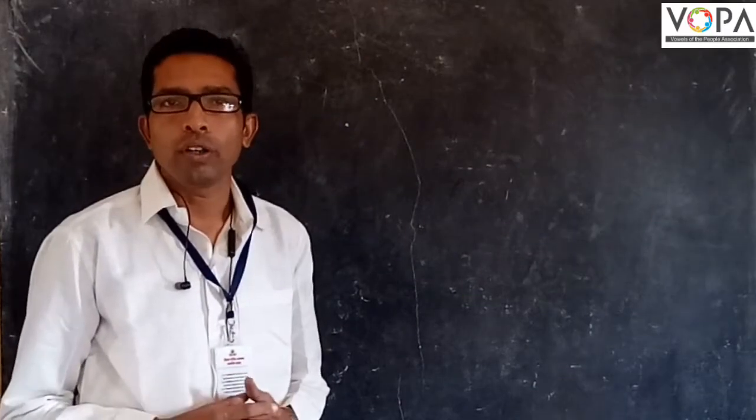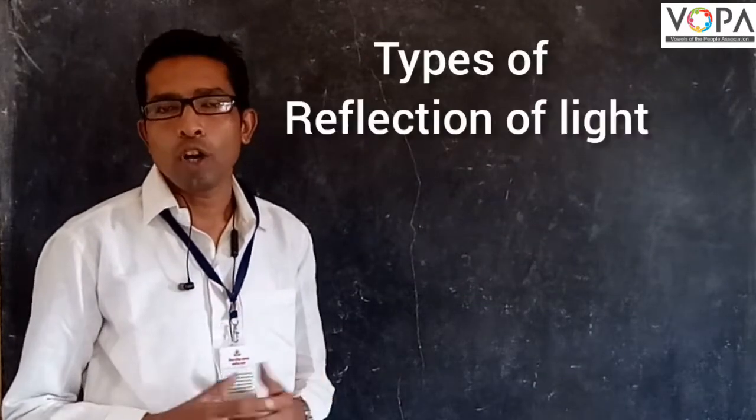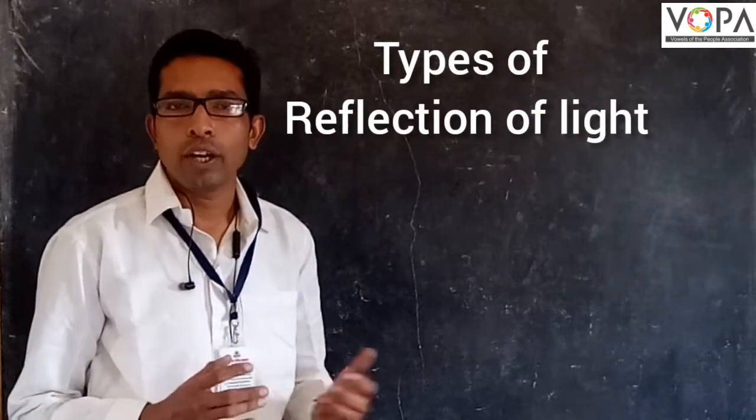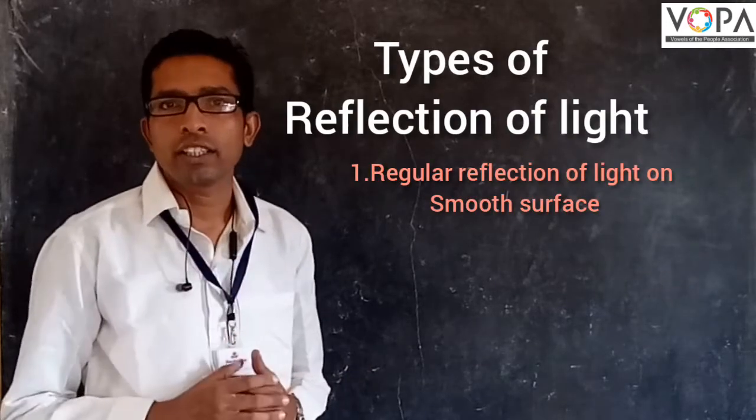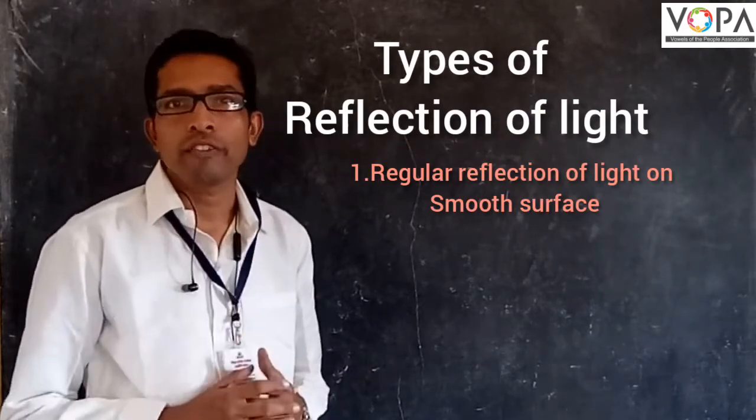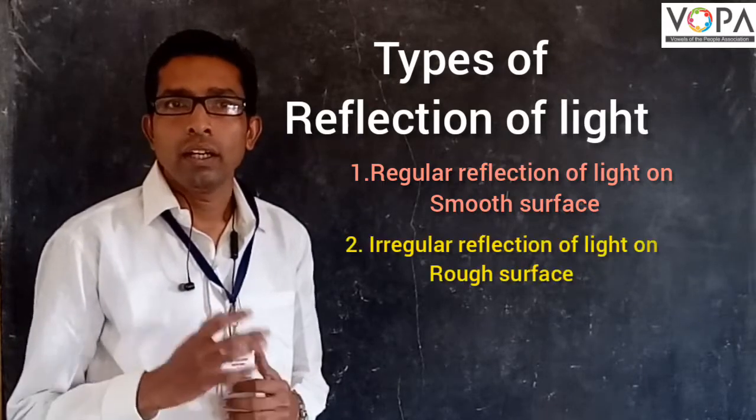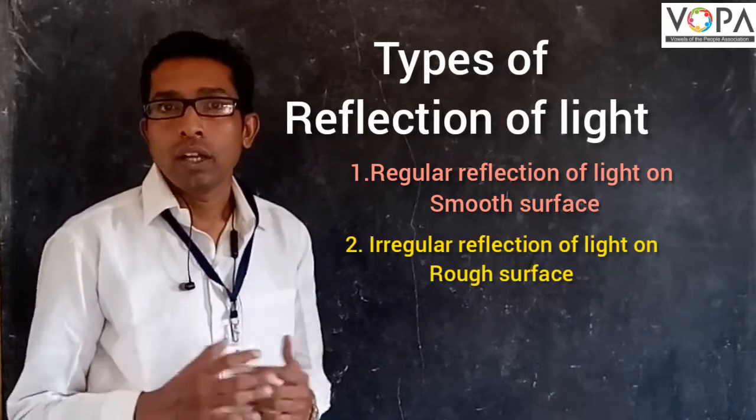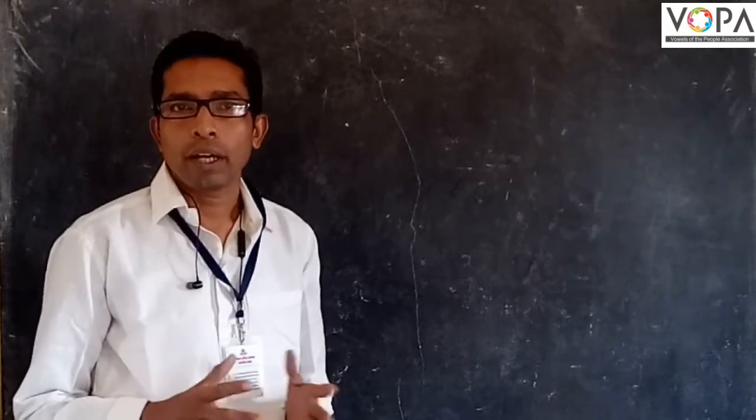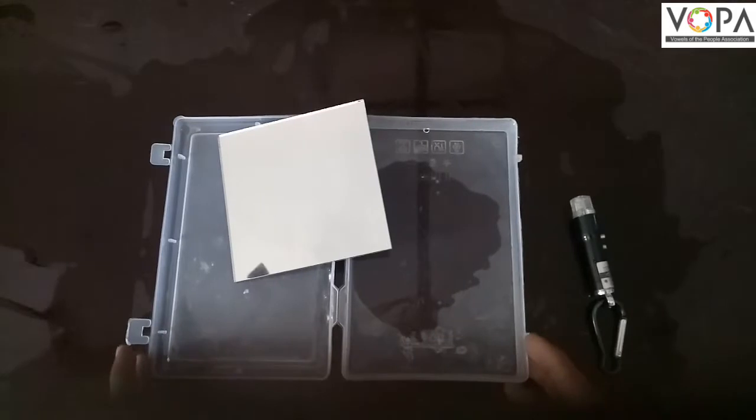Today we will learn about the types of reflection of light. So first type is regular reflection of light on the smooth surface and the second one is irregular reflection of light on rough surface.